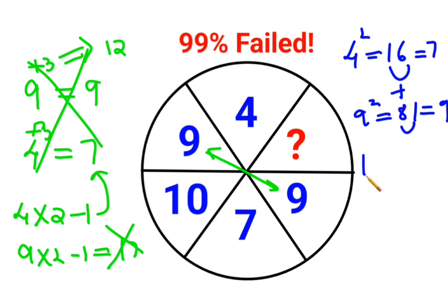So then 10 square should be what? 100. When you add all of them, you get the answer as 1. So the answer for this question mark in this puzzle is just 1.